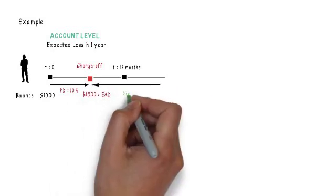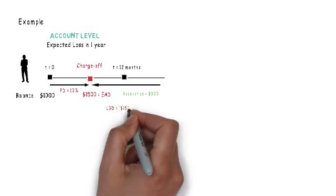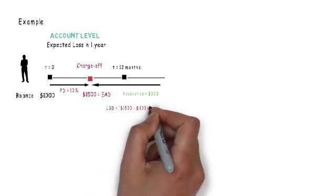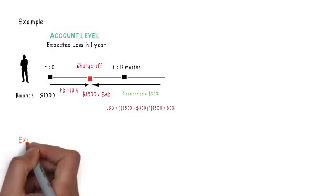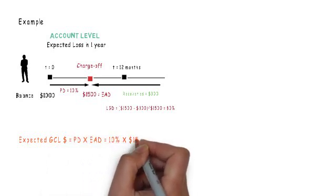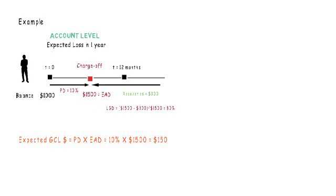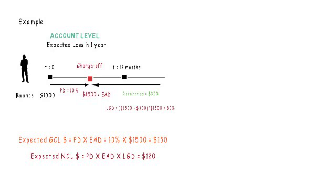Finally, let's say that the bank will be able to recover 300 dollars out of these 1500 from the consumer in case of default, which means the bank will eventually lose 1200 dollars. Hence, the LGD is equal to 1200 by 1500, which is equal to 80%. Expected GCL in the next one year for this account is equal to PD multiplied by EAD, which is equal to 150 dollars. And expected NCL, which is the product of PD, EAD and LGD, is equal to 120 dollars.